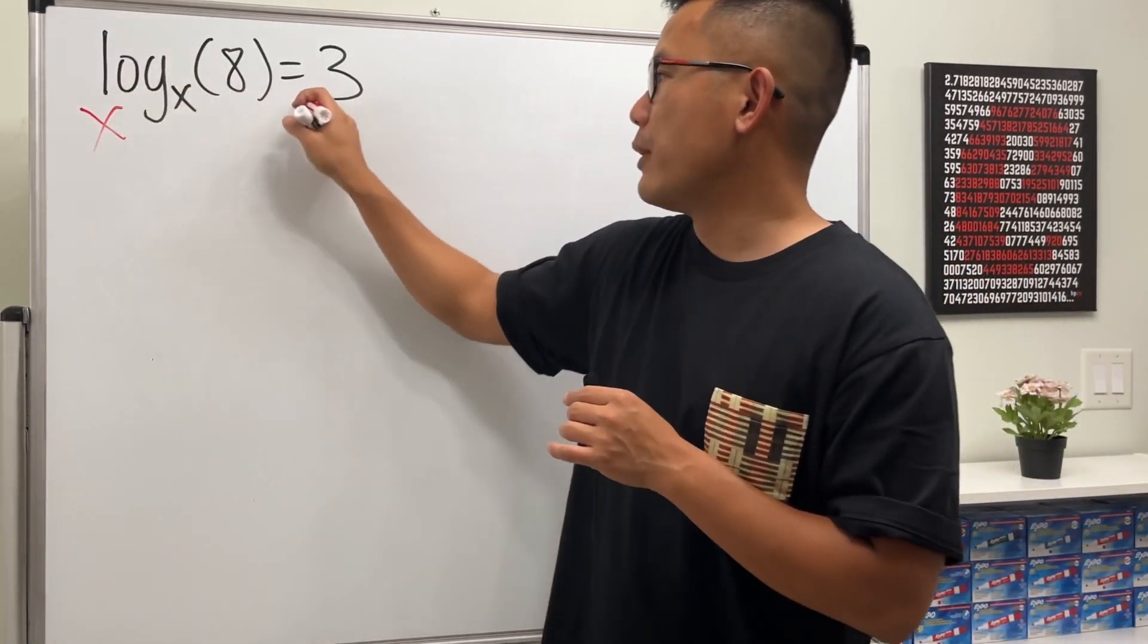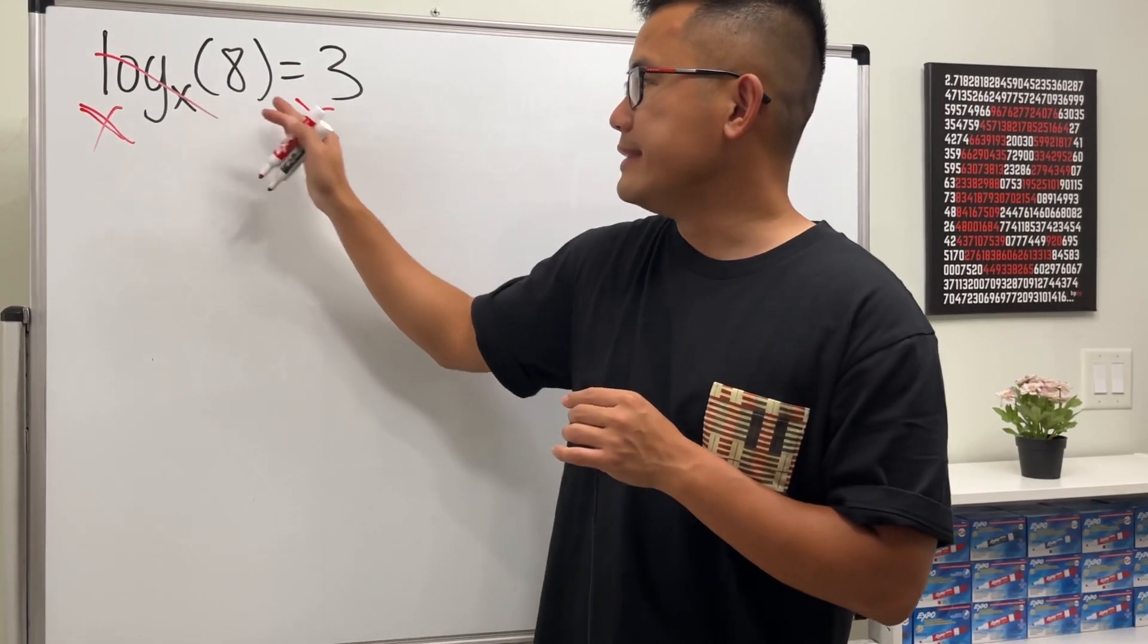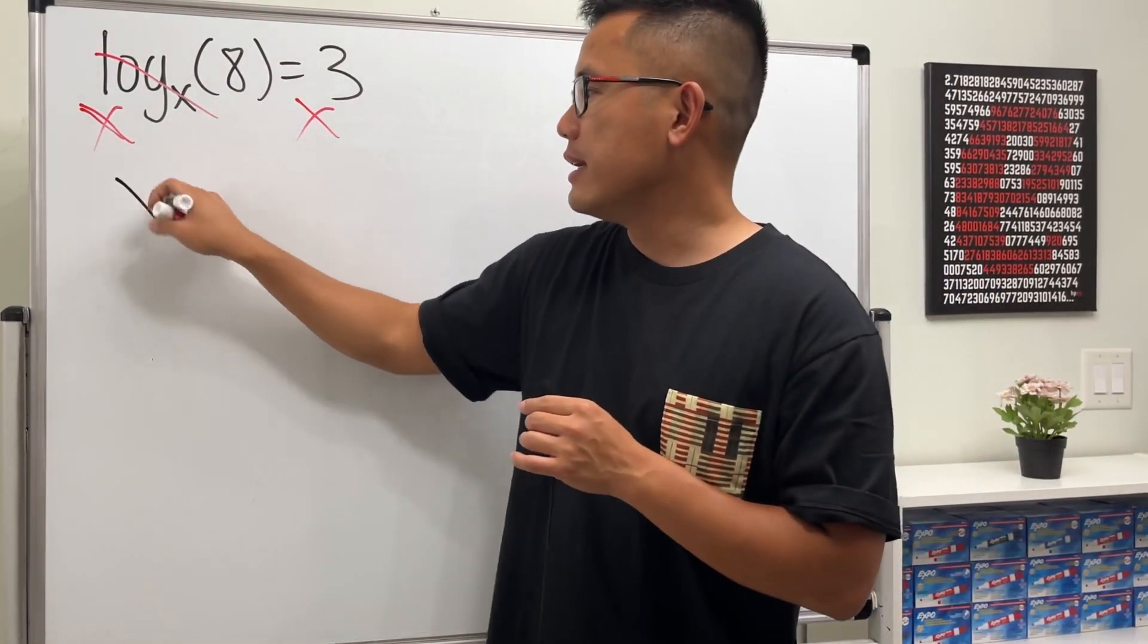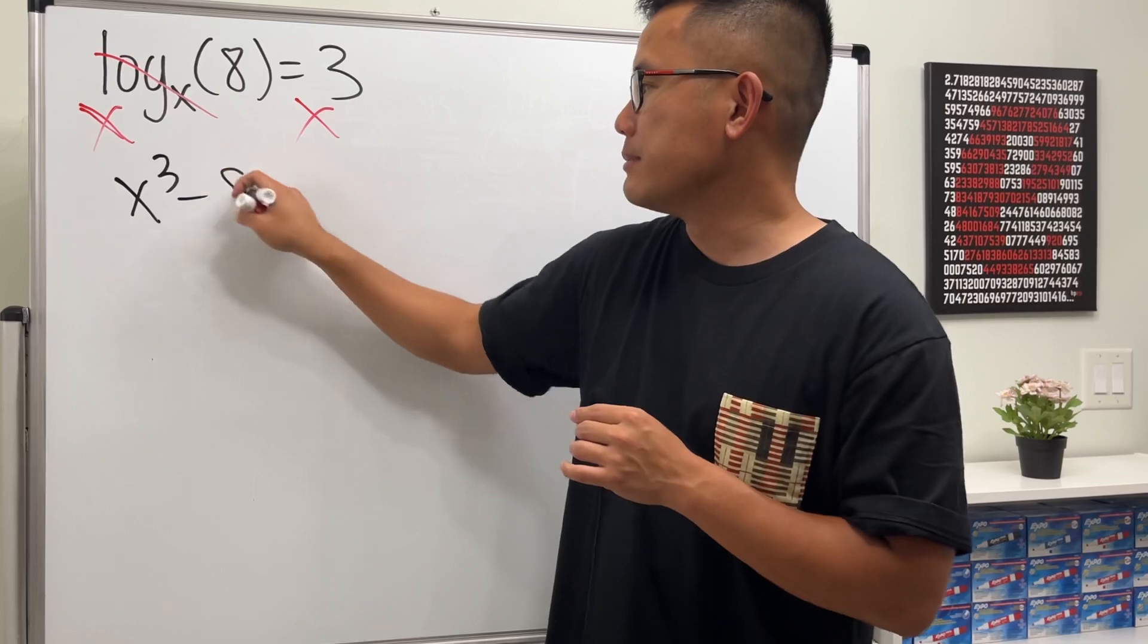Well, don't worry. Let's just do x to this power and x to this power, so this and that will cancel. And then we just have 8 is equal to x to the third power. So let's write it as x to the third power is equal to 8, which is the same as x cubed minus 8 is equal to 0.